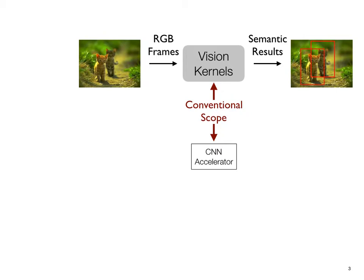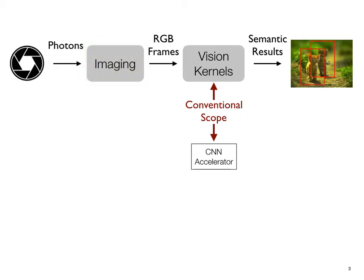This paper offers a different but complementary perspective. The observation is that the vision kernel is typically just half of a story in an end-to-end application pipeline. The other important half is the imaging stage, which converts raw camera sensor data to frames that vision kernels consume.